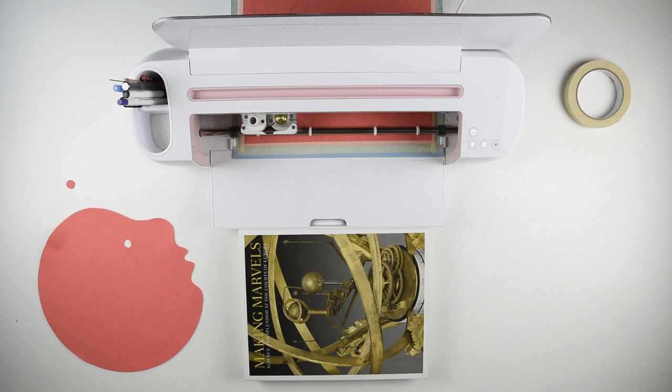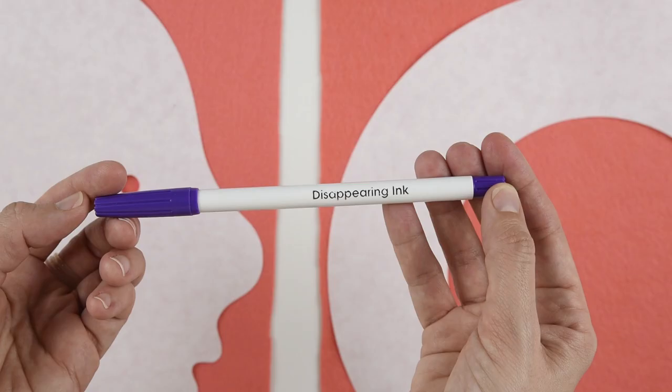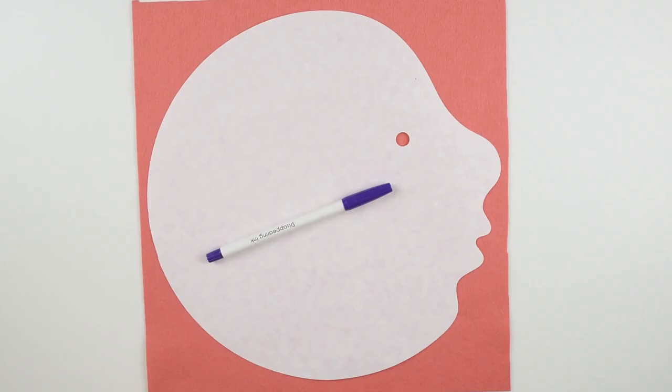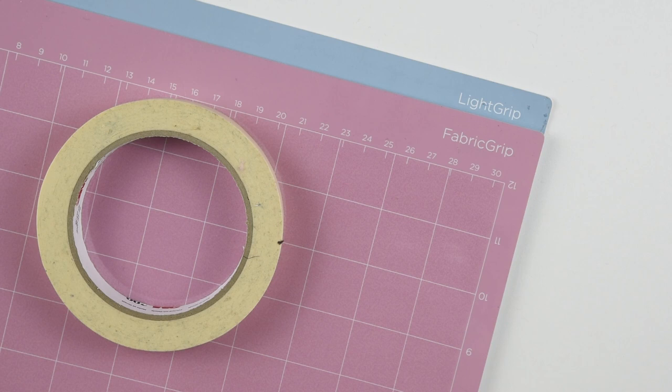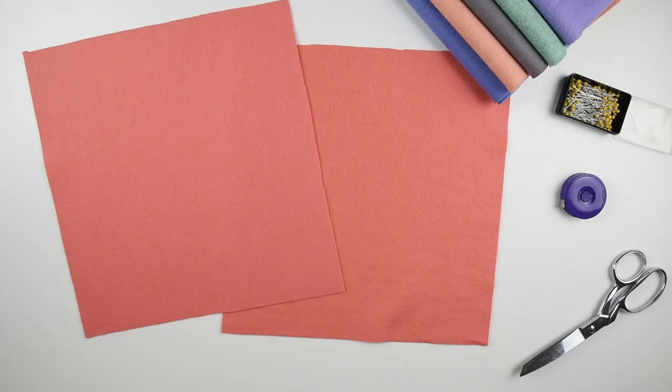I'll be cutting my felt out with my Cricut maker, but if you don't have one you can make a paper template and use a disappearing ink fabric pen, tailor's chalk, or a pencil to transfer your pattern onto the felt and then cut it out with scissors. If you do have a Cricut, you'll also need either a fabric or light grip cutting mat, masking tape, and a rotary blade.